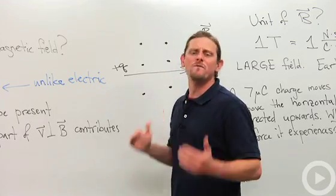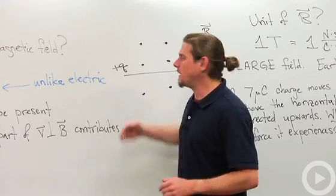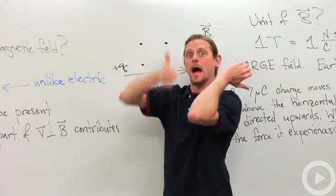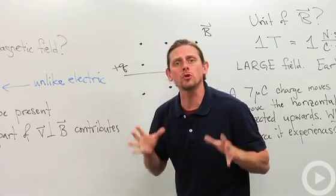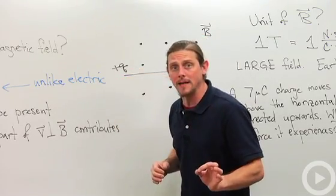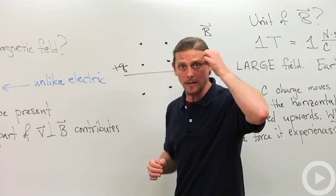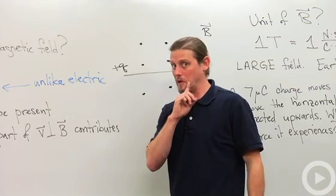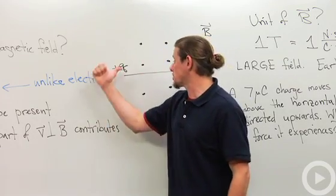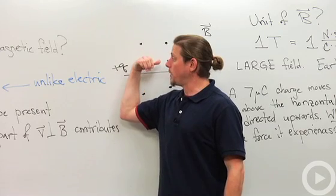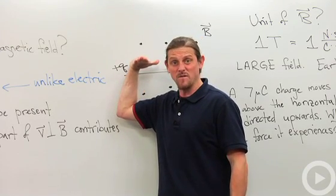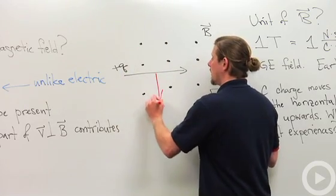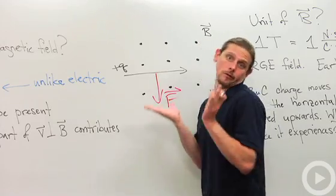So what direction is the force in? Well, first off, we know because the magnetic field is that way and the charge is moving this way, the force has got to either be up or down because those are the two directions that are perpendicular both to the magnetic field and to the velocity. Which one do we pick? Well, we use our right-hand, that's why it's called the right-hand rule, and we put our thumb in the direction that the charge is moving in. We put our fingers in the direction that the magnetic field is in, and our palm will now point in the direction of the force.